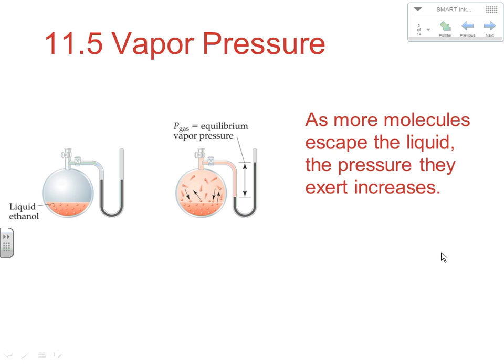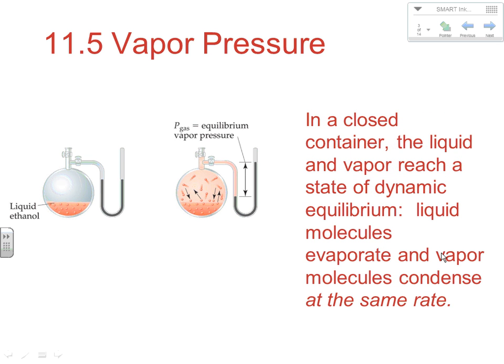As more molecules escape the liquid, you get a greater number of particles above the liquid, and those particles exert a pressure. So as more molecules escape, the pressure they exert is going to increase. When you heat up a liquid, its vapor pressure increases. Now, in a closed container, something special happens: the liquid and the vapor reach a state of dynamic equilibrium. The rate at which liquid particles become gas and gas particles go back into the liquid phase — condensation — those rates become equal.